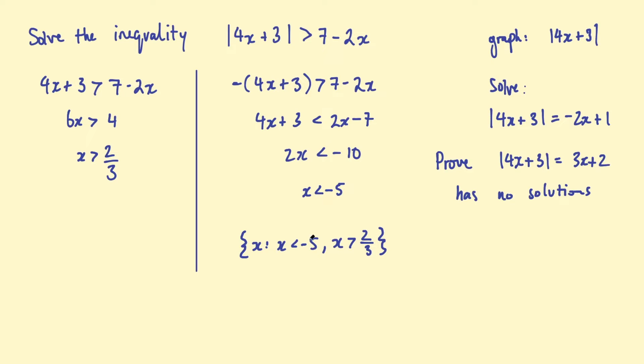And you can check this. So, what would not be a solution? Well, x equals 0 because that's less than 2 thirds and greater than negative 5. So, 0 should not work. So, if we plugged in 0 for x, we would get 3 on the left-hand side and then 7 on the right. And 3 is clearly not greater than 7. So, that checks out. Then maybe we could check negative 6 because it has to be less than negative 5. So, what would we get there? We would get negative 24 plus 3. That's negative 21. And then 7 plus 2 times 6 is 19. So, 21 is greater than 19. Okay, that works. Then we could also try x equal to 1. So, that should work as well. 4 plus 3 is 7. And then 7 take 2 is 5. So, 7 is greater than 5. Okay, so that fulfills those checks at least. So, we can be fairly confident that's correct.